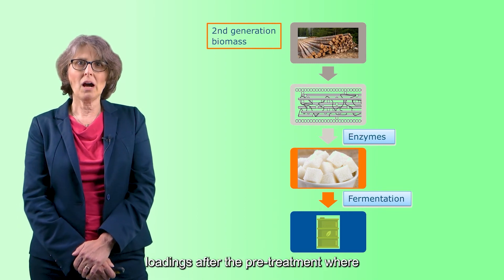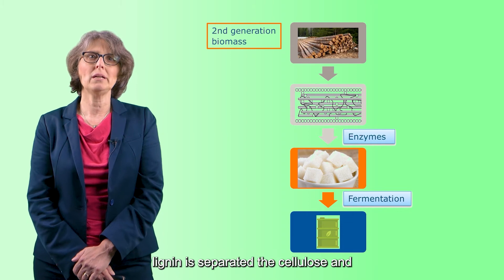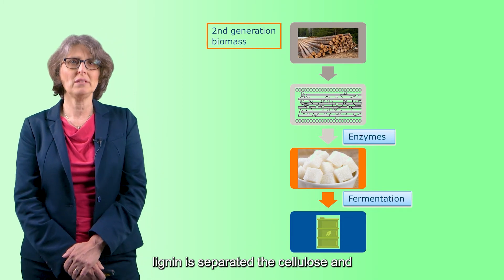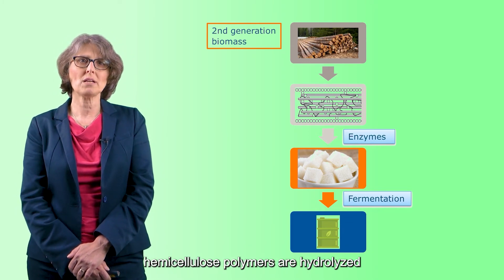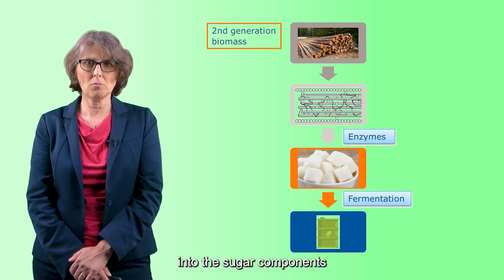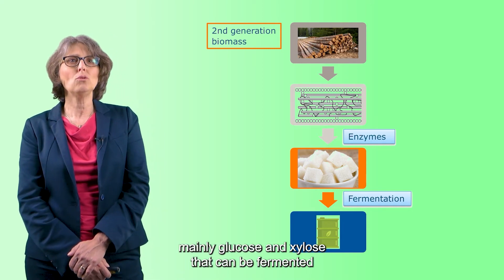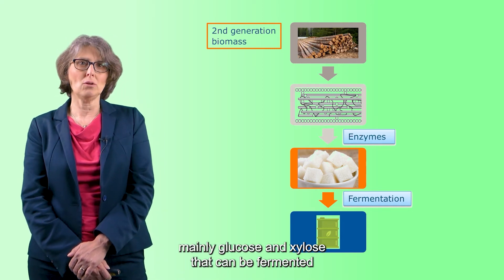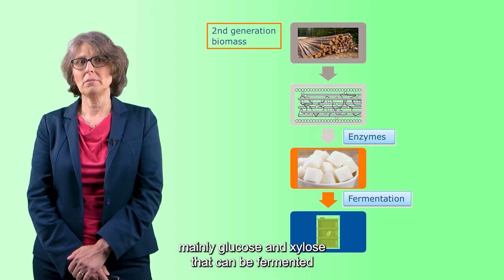After the pretreatment where lignin is separated, the cellulose and hemicellulose polymers are hydrolyzed into their sugar components, mainly glucose and xylose, that can be fermented.